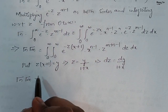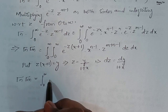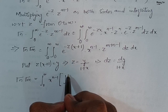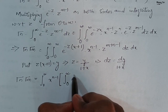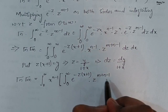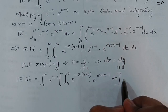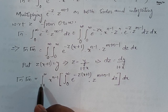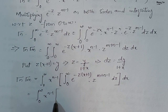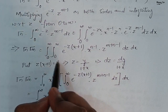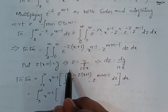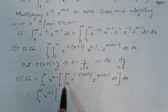We will integrate with respect to z, taking x as constant. This becomes integration from 0 to infinity of x to power n minus 1, times the inner integration from 0 to infinity of e to power minus z(x plus 1) into z power m plus n minus 1 dz, then dx. On changing the variable to y, when z equals 0, y equals 0; when z equals infinity, y equals infinity, so the limit remains 0 to infinity.